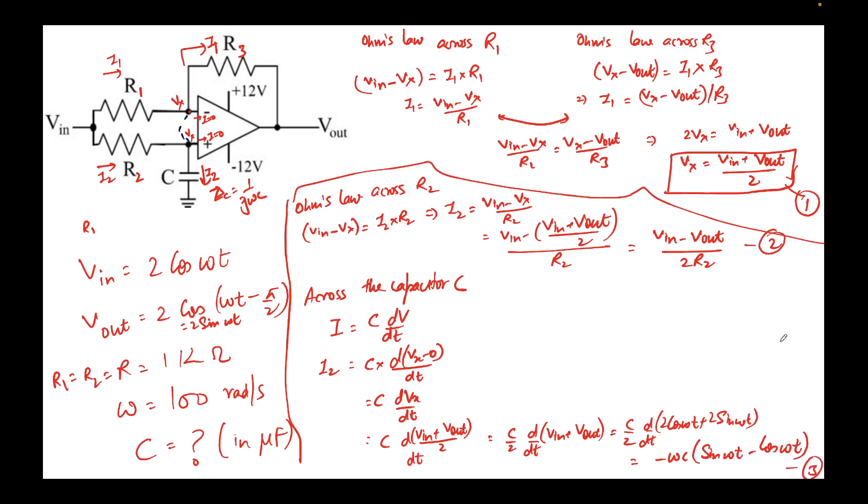Now expression 2 must equal expression 3 because both are the expression for I_2. So I will write that 2 equals 3. (V_in minus V_out) divided by 2R_2 equals minus omega C times (sin omega t minus cos omega t). V_in we know is 2 cos omega t minus 2 sin omega t divided by 2R_2. 2 gets cancelled, so we get (cos omega t minus sin omega t) over R_2.